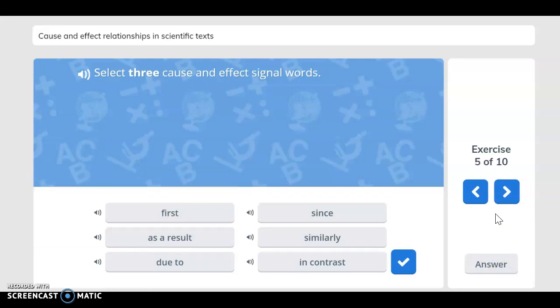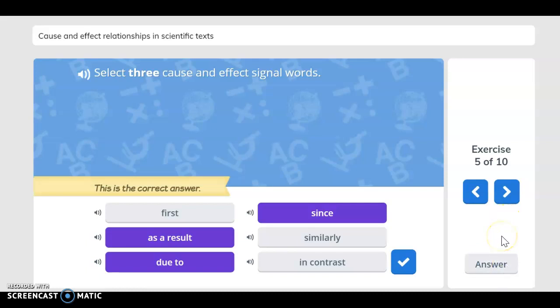Select three cause and effect signal words. Here they are: as a result, due to, and since.